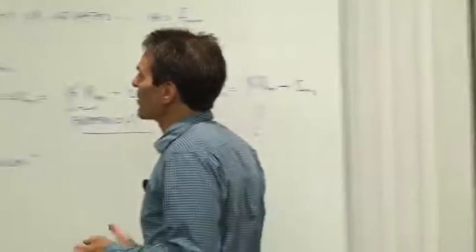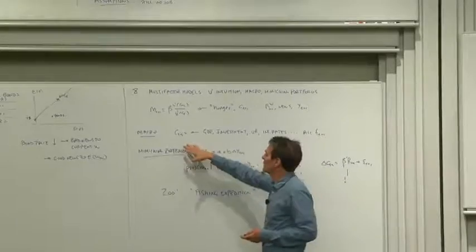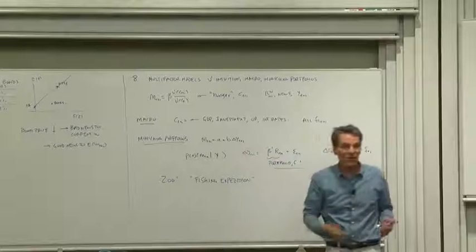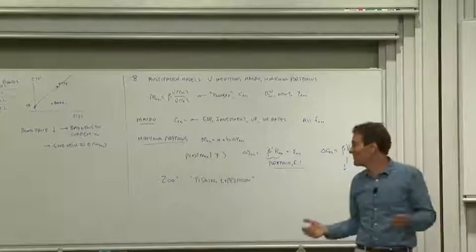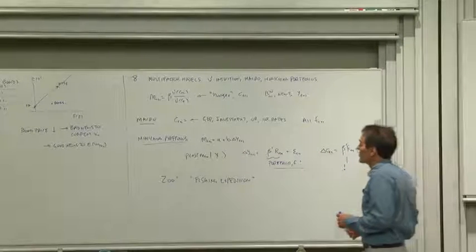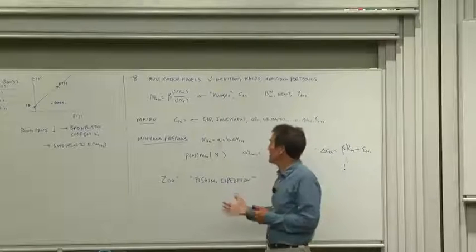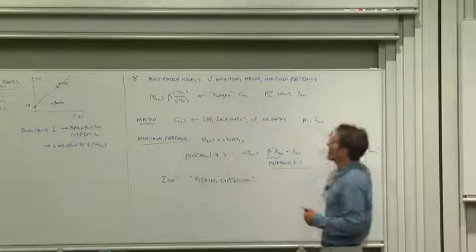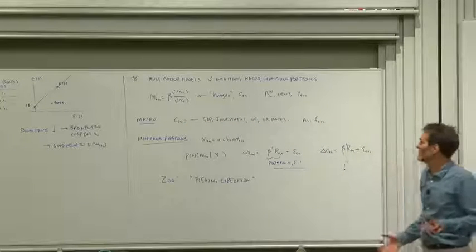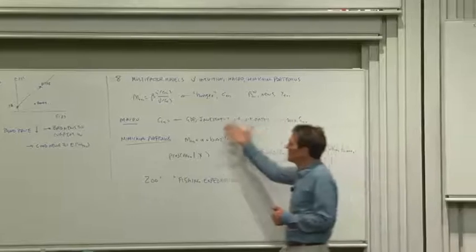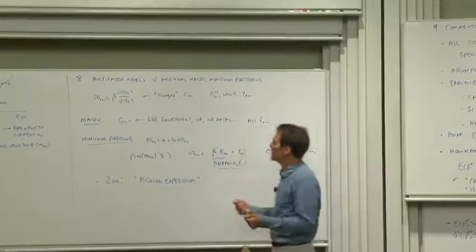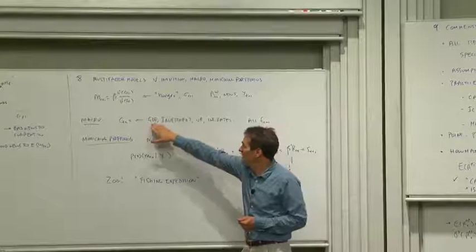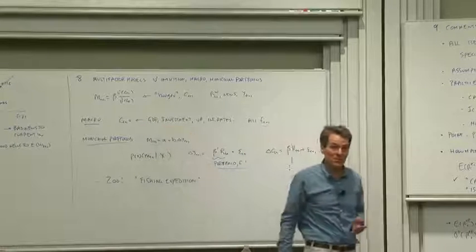Of course, if you talk to a macroeconomist, they write whole models that relate consumption growth to GDP, investment, unemployment, interest rates, productivity shocks, you name it. So under the same philosophy, we could use those relationships to proxy consumption for its macroeconomic determinants. And in fact, lots of people have written down factor models where they look at expected returns and then betas on GDP growth, investment growth, and so on and so forth.